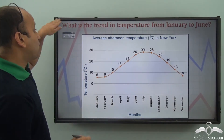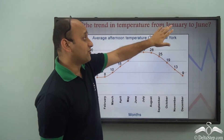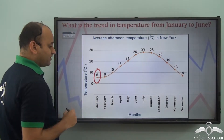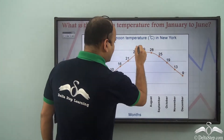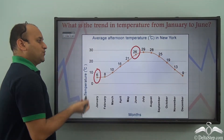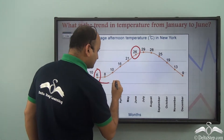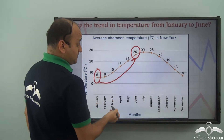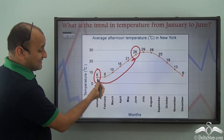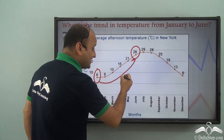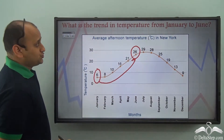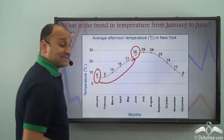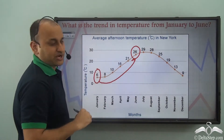The question is: what is the trend in temperature from January to June? We have January here and June here. What is the trend you can see? It's an upward trend. So we can interpret that the temperature has increased from January to June — it is an upward or increasing trend.